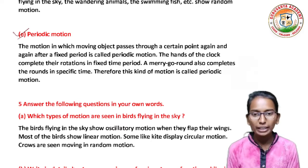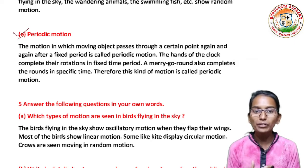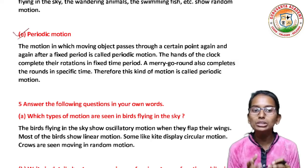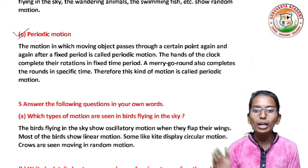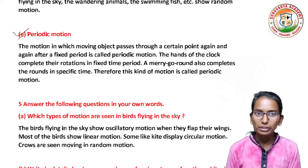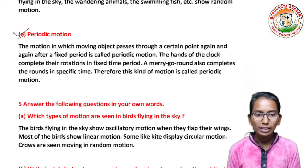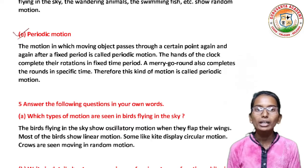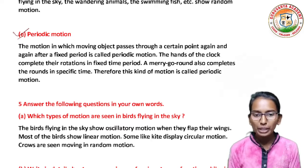The motion in which a moving object passes through a certain point again and again after a fixed period is called periodic motion. The hands of a clock complete their rotation in a fixed time period.